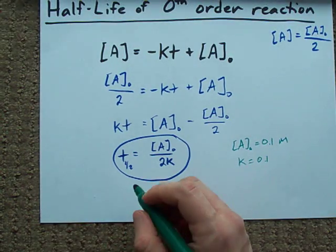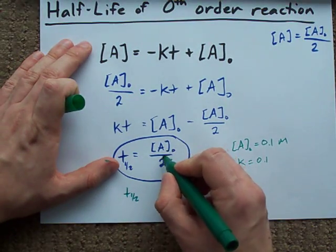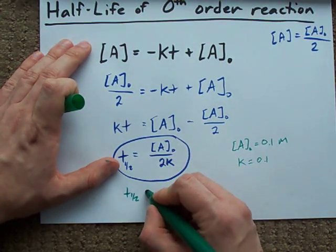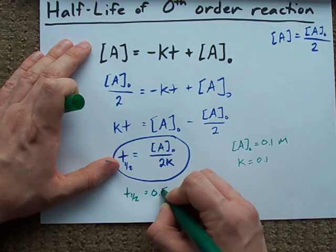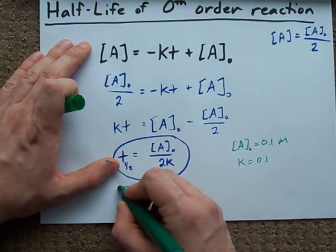So then all you'd need to do is plug those numbers in. 0.1 divided by two times 0.1 leaves you with 0.5, and that would be the half-life.